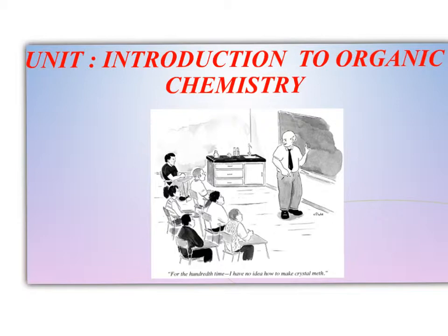All types of life are based on carbon compounds, so the chemistry of carbon is called organic chemistry. This is due to the carbon atom's ability to form up to four bonds with other atoms, as well as to link up with itself to form chains or ring-shaped structures. Organic chemistry was first termed in 1807 by John Jacob Berzelius.